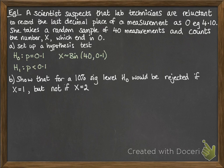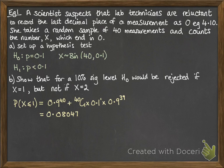Part b: show that for a 10% significance level, the null hypothesis would be rejected if X=1 but not if X=2. The probability that X ≤ 1, using our binomial calculations, comes to 0.08047.